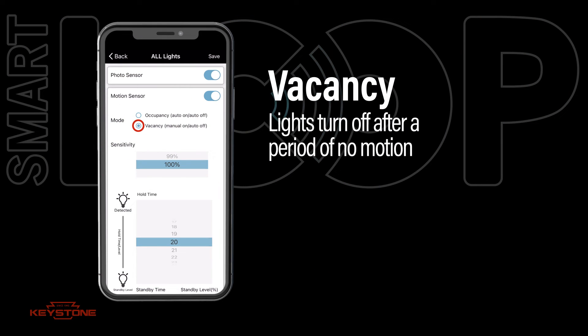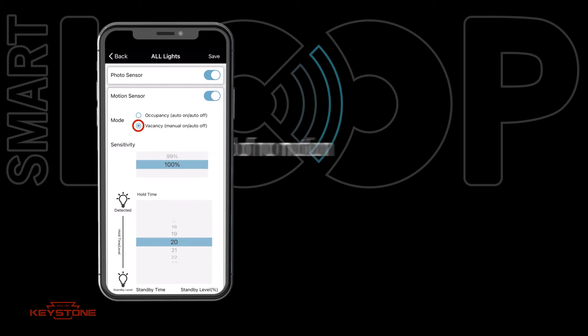Vacancy mode requires manual activation of lights but will automatically turn off lights when no motion is detected.